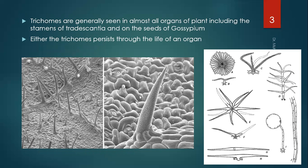This photograph shows the different types of trichomes that emerge from the outer epidermal layer of plants — on the leaves, in the stems, as well as on the petals and stamens. These are the special, different types of trichomes also present on the epidermal cells.